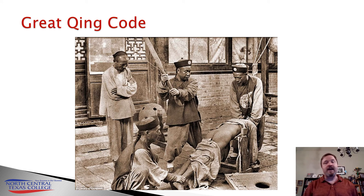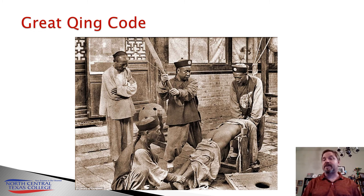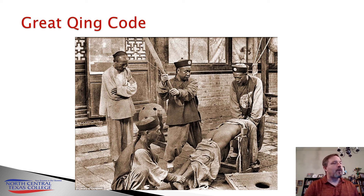The laws themselves are outlined in great detail. For example: whenever a horse, bovine animal, or dog rams, butts, kicks, or bites people, and the owner has not marked or tied it in the right way, or if there is a mad dog and he does not kill it, he will receive 40 strokes of the light bamboo. Very detailed. And if some offense happens that is not covered by the code, they have a stopgap: everyone who does that which ought not be done will receive 40 strokes of the light bamboo; if the matter is adjudged more serious, 80 strokes of the heavy bamboo. You're covered.